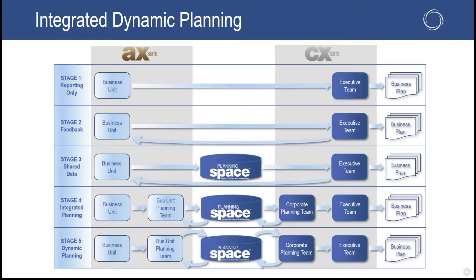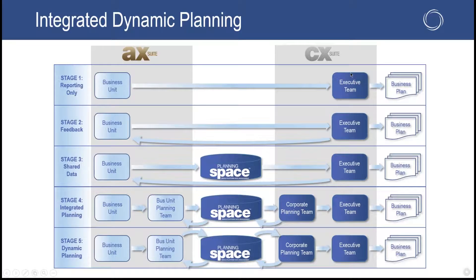When we envision IDP or IDPS within an organization, we're looking at different stages — and generally they will fall within one of five. Most organizations we deal with today, when we first start conversations with them, are within the first three, most often the top two. Some more advanced organizations go into stage four and five. For the most part when we engage clients, they are at a linear process where the business unit does the numbers, pushes reporting to the executive team, the executive team makes adjustments, and then publishes the business plan to the overall corporation and stockholders.